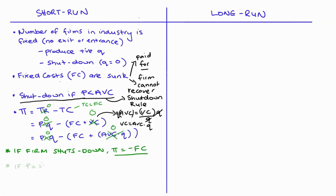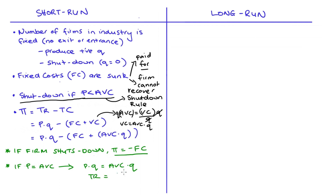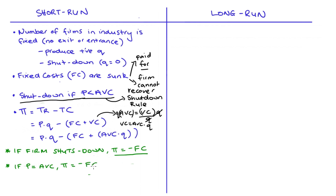Now let's check what happens if price equals average variable cost (P = AVC). Multiplying both sides by Q: P × Q = AVC × Q, which means total revenue equals variable costs. So total revenue exactly covers variable costs, but we're still left with the sunk fixed cost component. Profit in this case would be negative fixed costs (−FC) — the same outcome as shutting down.